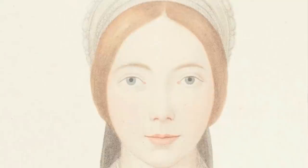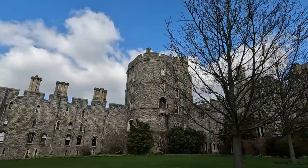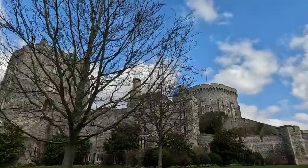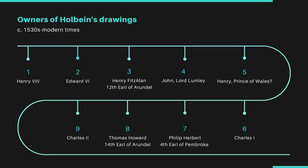Why then did someone in the 18th century think that this woman was Lady Parker? The answer lies in the provenance of the drawing. It now resides in Windsor Castle as part of the Royal Collection. It is one of a set of over 80 drawings of members of Henry VIII's court by Holbein and, having originally been owned by that King, was passed to his son Edward VI. From there it went to Henry Fitz-Allen, 12th Earl of Arundel, who died in 1580 and left it to his son-in-law John Lord Lumley. We think it was later owned by Henry Prince of Wales, son of James I, before being inherited by Charles I, who gave it to Philip Herbert, 4th Earl of Pembroke in 1627 or 1628, who then gave it to Thomas Howard, 14th Earl of Arundel. It was brought back into royal ownership by Charles II in 1675 and has stayed there ever since.